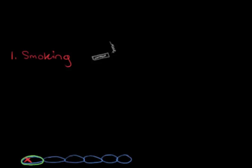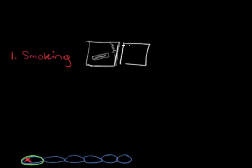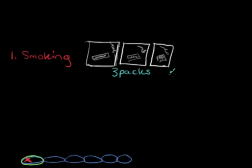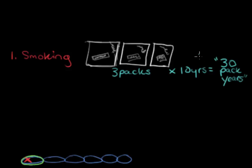This unit of measure is a pack year. For example, if a patient has been smoking three packs of cigarettes a day and has been doing this for 10 years, that's three packs per day times 10 years — equivalent to 30 pack years. 30 pack years is an important number because it places this person at a very elevated risk of developing lung cancer.